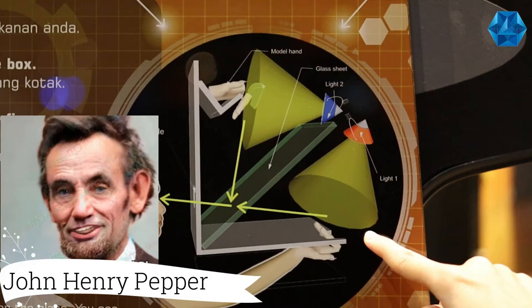Excellent explanation, Farah. I am John Henry Pepper, inventor of the Pepper's Ghost Illusion. I have a mystery for all of you to solve. Can you find out my date of birth? If you do, you might win some amazing prizes.